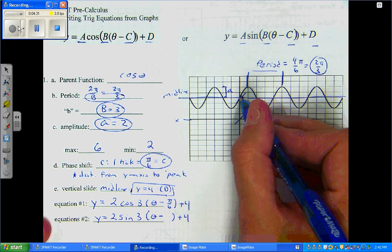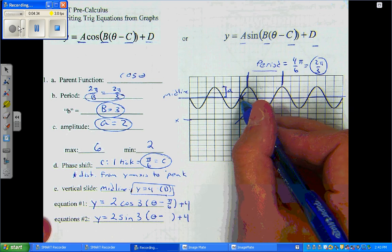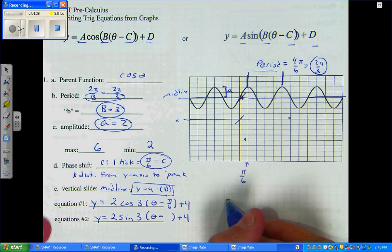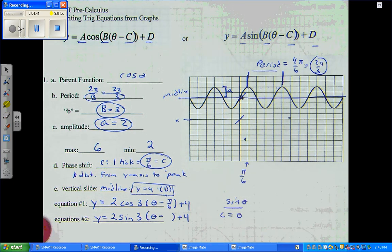It's going up. I'm on the function and it's going up. So, that means my C value for sine is 0. I don't have to move.